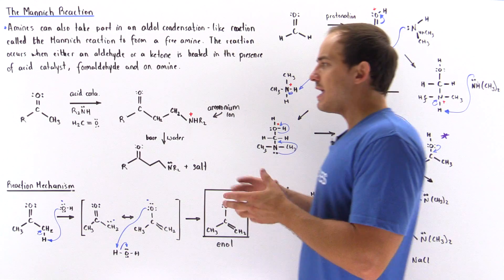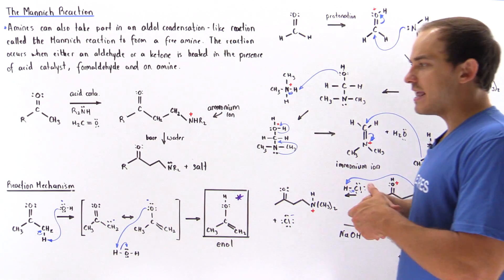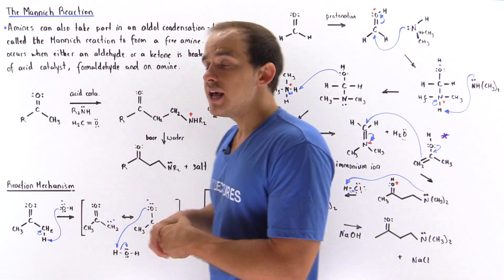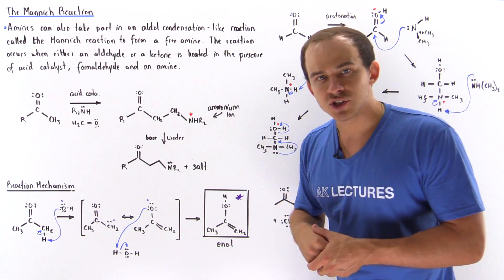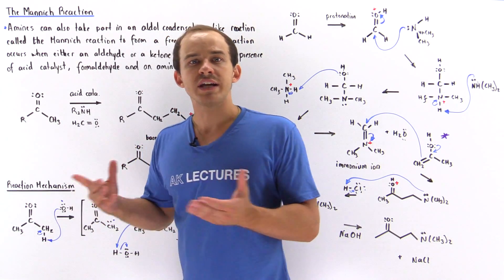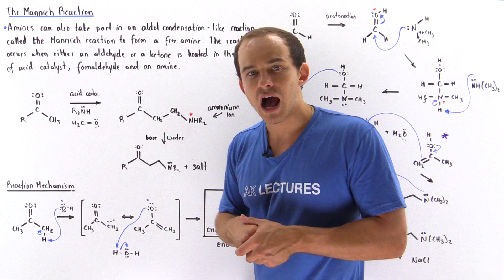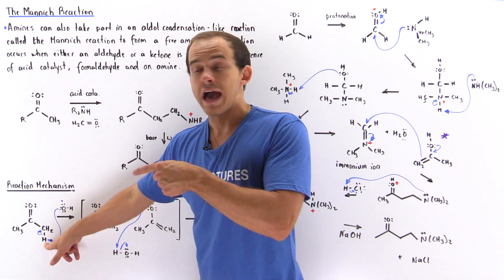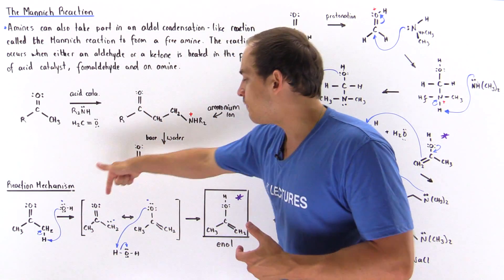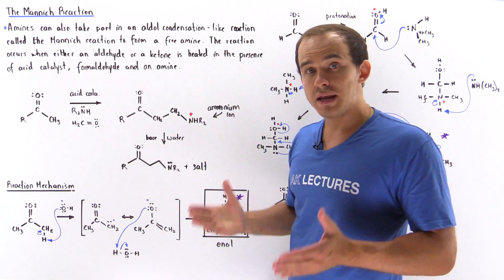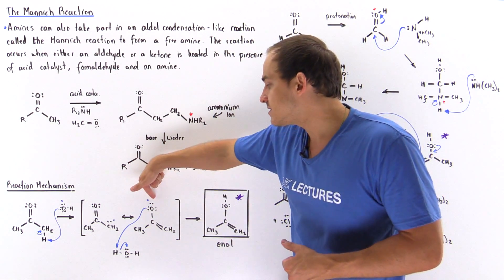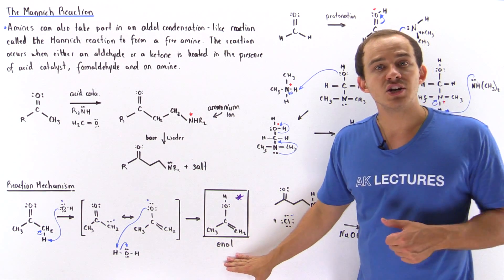Once we mix in all these reagents, two things begin to happen at the same time. First, the carbonyl molecule — either the ketone or aldehyde — begins to react to produce the enol counterpart. Suppose this is acetone: the hydroxide base deprotonates an H off the alpha carbon, forming a resonance-stabilized intermediate. In the next step, the water molecule formed protonates the oxygen, giving the enol product, which plays a role in the reaction mechanism.